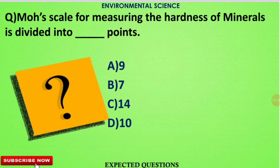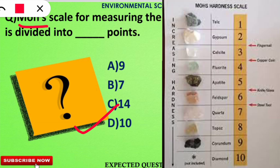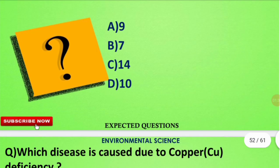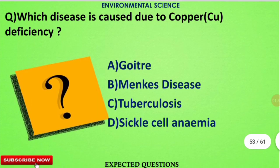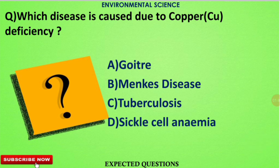The next question is related to mineralogy: the Mohs scale for measuring the hardness of minerals is divided into how many points? This question has come several times in the NET examination. The correct option is option D — the Mohs scale, which is used to measure the hardness of minerals, has 10 parts, just as the pH scale has 14 units.